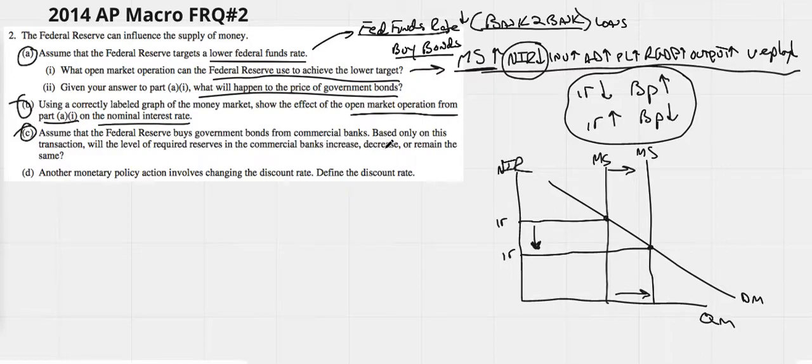Assume the Federal Reserve buys government bonds from commercial banks. Based only on this transaction, will the level of required reserves in the commercial banks increase, decrease, or remain the same? So this is referring back to T accounts, which some of you have done.